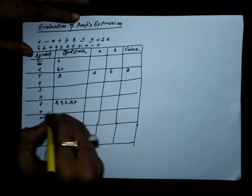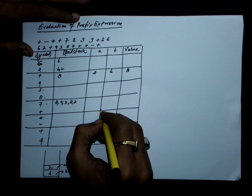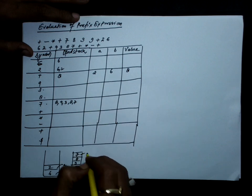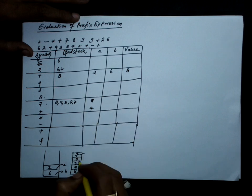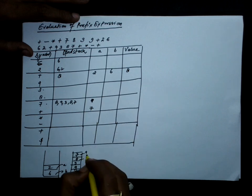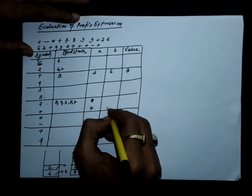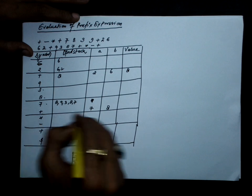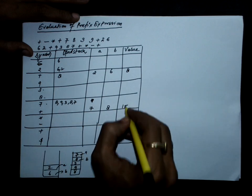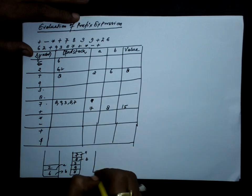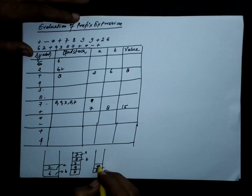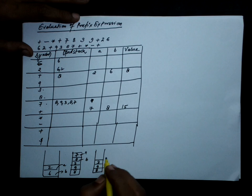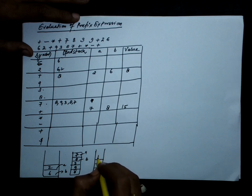Then we have plus — pop this stack twice. First popped value is taken in symbol A, which is 7. Next popped value is taken in symbol B, which is 8. So 7 plus 8 equals 15. Push 15 on the stack. On the stack we already had 8, 9, 3, so we push 15 on this.